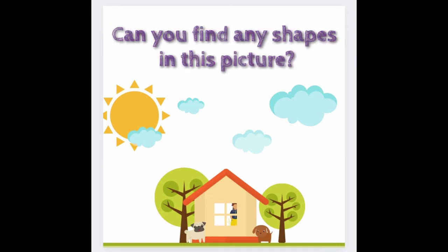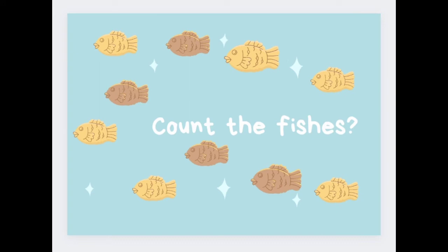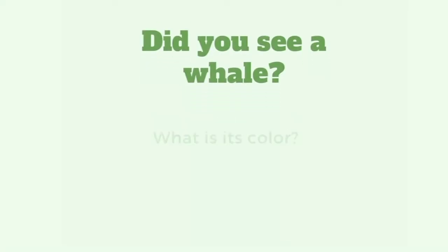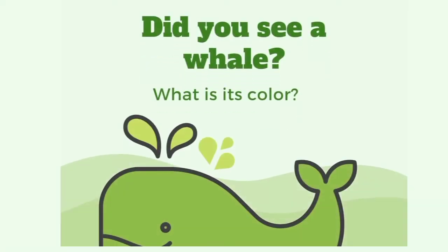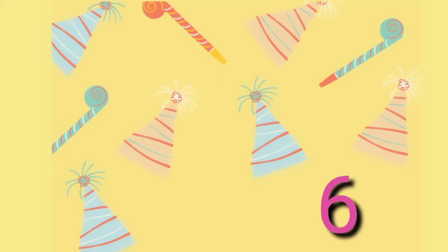Can you find any shapes in this picture? Time to count fishes — 10. Did you see a whale? What is its color? Green. How many party hats did you see? Six.